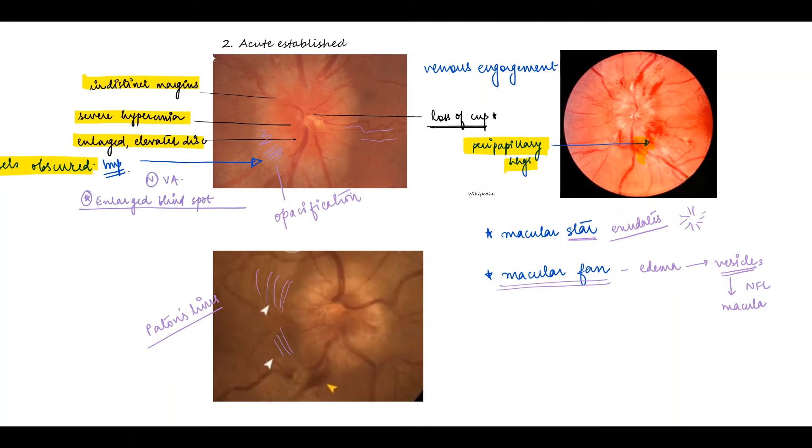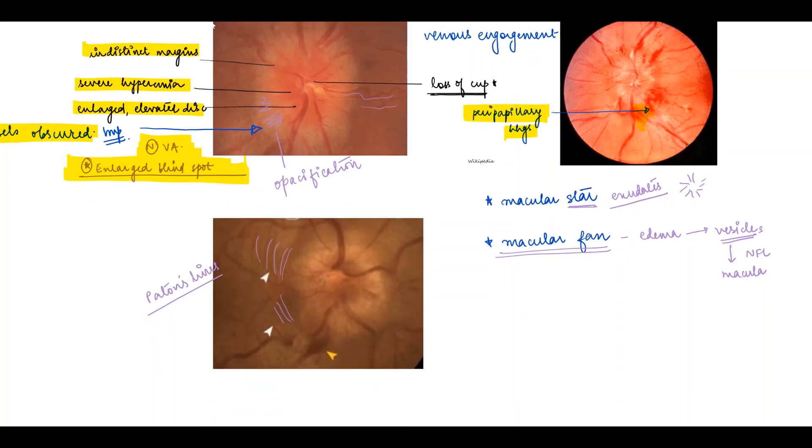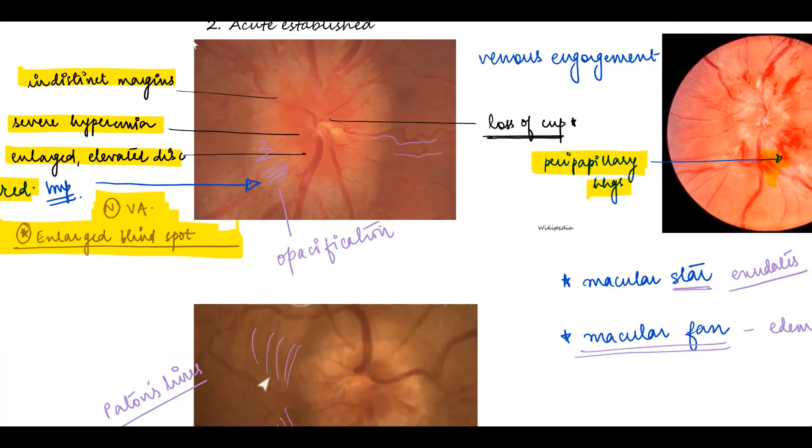We should remember that the vision is normal even in this stage but on fields we might be able to see an enlarged blind spot, and this is because of the detachment of the peripapillary retina from the disc. The edema also fills up the disc and we can see a loss of the typical cup.